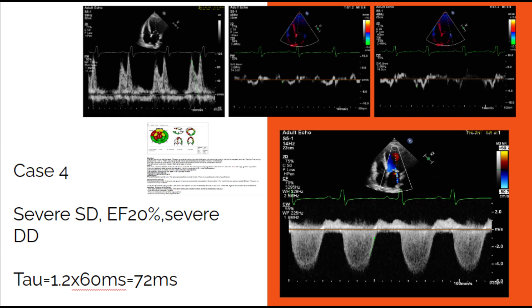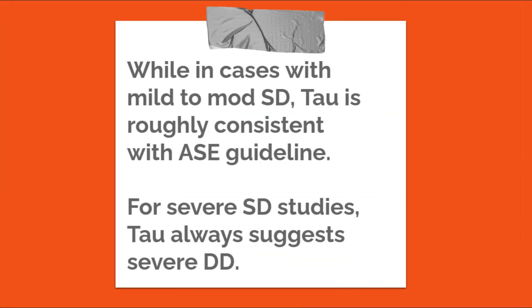According to the ASE diastolic function guideline, some patients in the severe systolic dysfunction category could be diagnosed with mild or moderate diastolic dysfunction. However, simultaneous measurement of tau always suggests severe diastolic dysfunction. In mild and moderate systolic dysfunction, tau measurement is roughly consistent with the ASE diastolic function guideline. But in severe systolic dysfunction, tau always leads to a severe diastolic dysfunction diagnosis, while the guideline diagnosis could be different.